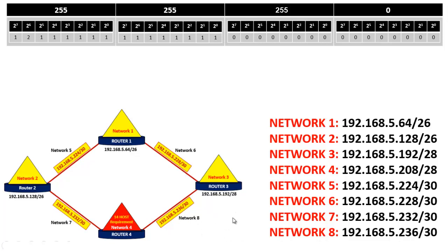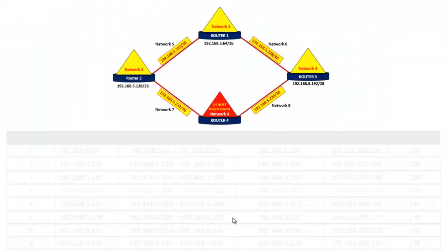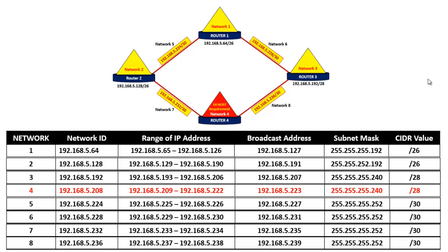This is how easily you can do VLSM. Here is a table where I have mentioned each and everything related to this particular example — the network ID, the ranges of IP addresses, the broadcast address, the subnet mask, and the CIDR value — for all 8 different networks. Go through this and all your doubts will be clear. If you have any doubt or want to ask a question, feel free to let me know in the comment section below and I will try to help you.